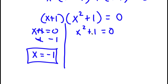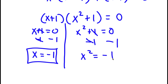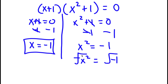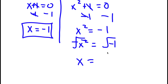For x² + 1 = 0, I'm going to first subtract 1 on both sides. The two ones cancel out and I have x² = -1. Now I'm going to take the square root on both sides, so I have the square root of x² equal to the square root of negative 1. The square root of x² is simply x, so x equals the positive or negative square root of negative 1.